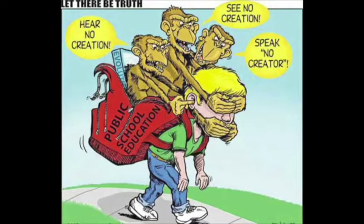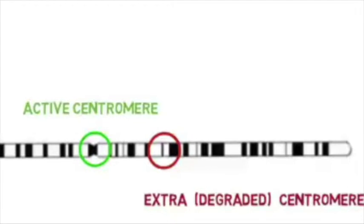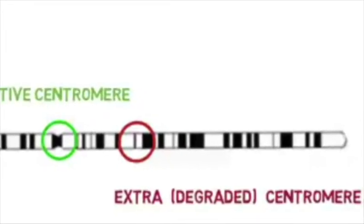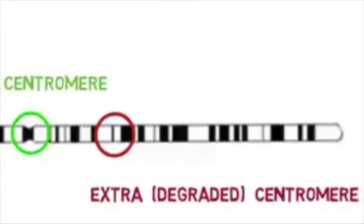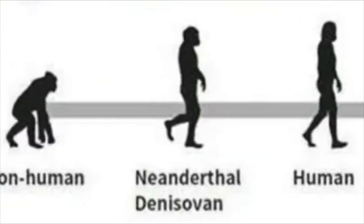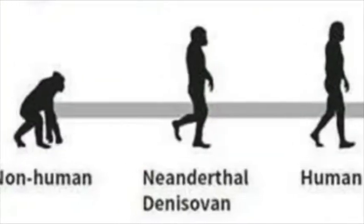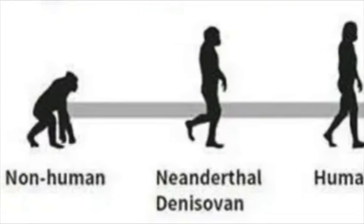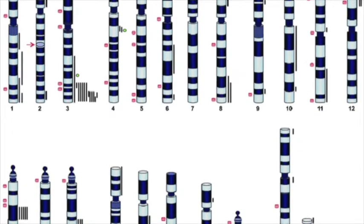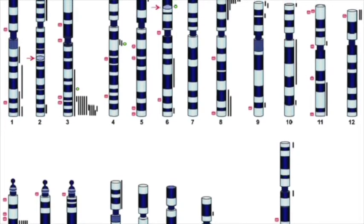You heard it from their own mouths — thrown under the bus by your own side. We already know the evolutionary agenda and why they ignore falsification. Next, they show the public that there is an extra centromere in chromosome 2 that is degenerate, thus assuming again that it was part of the ape pre-split. But there are many chromosomes that supposedly have degenerate centromeres that have never fused or lack them entirely, so it's hardly good evidence.